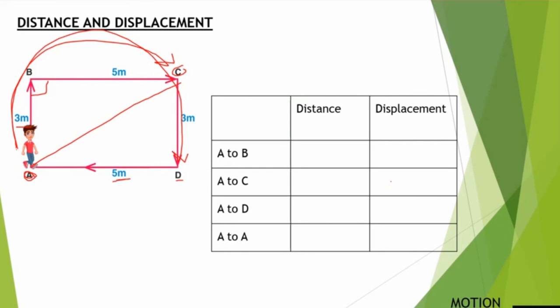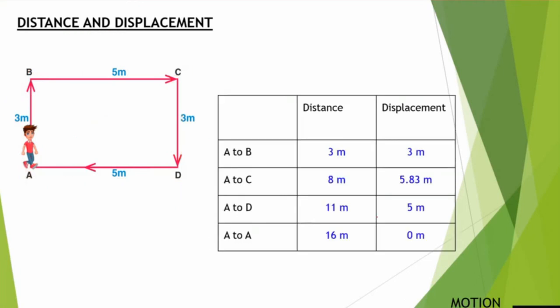For the case A to A, the person comes back to the initial position. For the distance, we add all the paths traveled: AB plus BC plus CD plus DA, which is 8 plus 8 equals 16 meters. For the displacement, since the initial and final positions are both the same, the displacement is 0 meters.